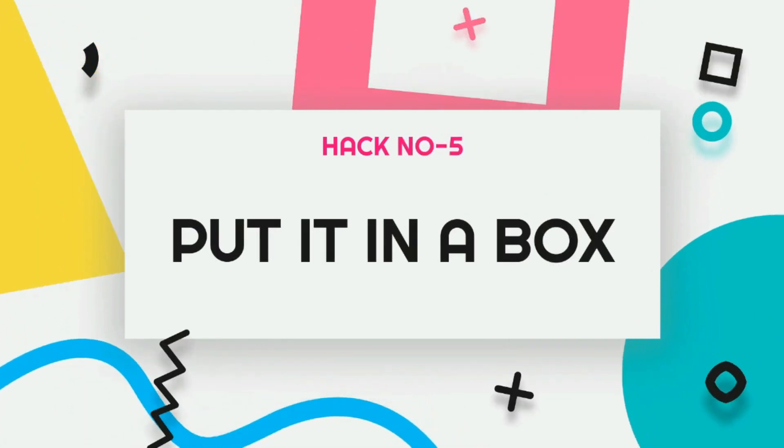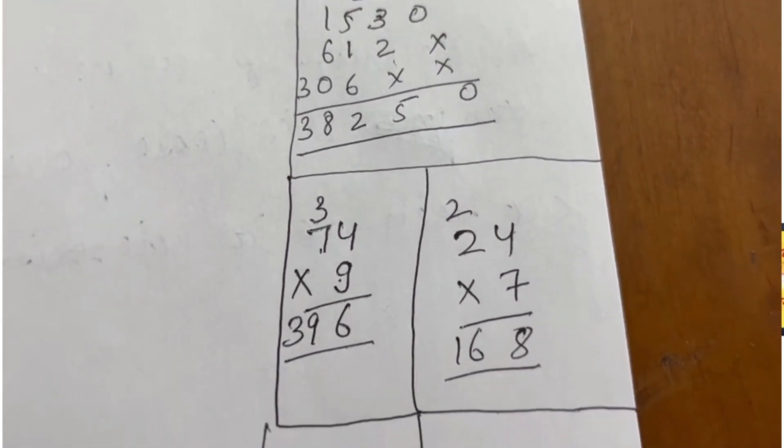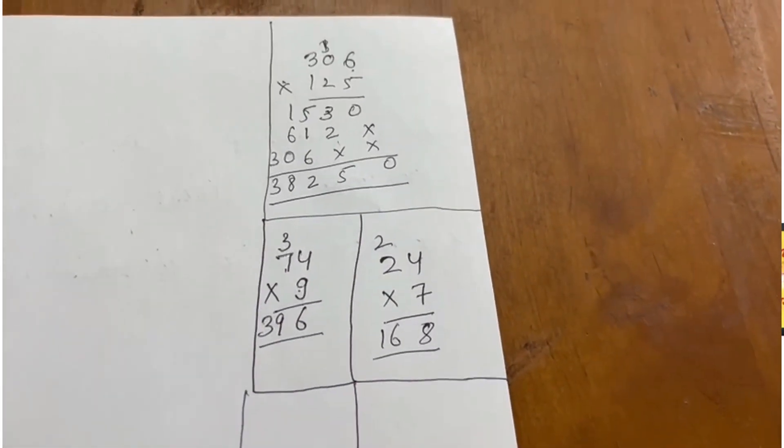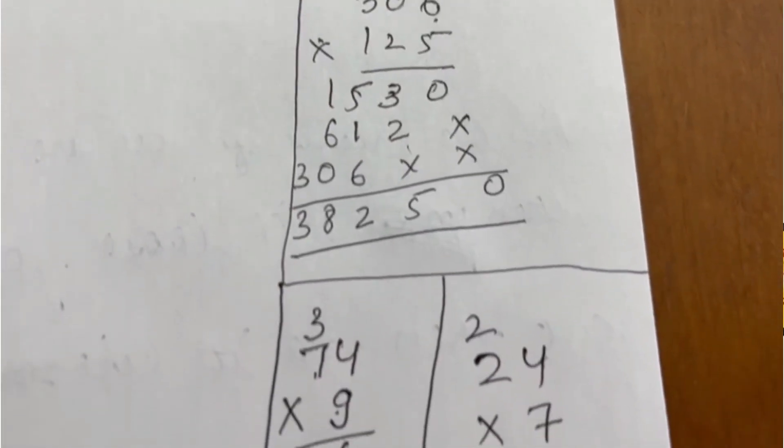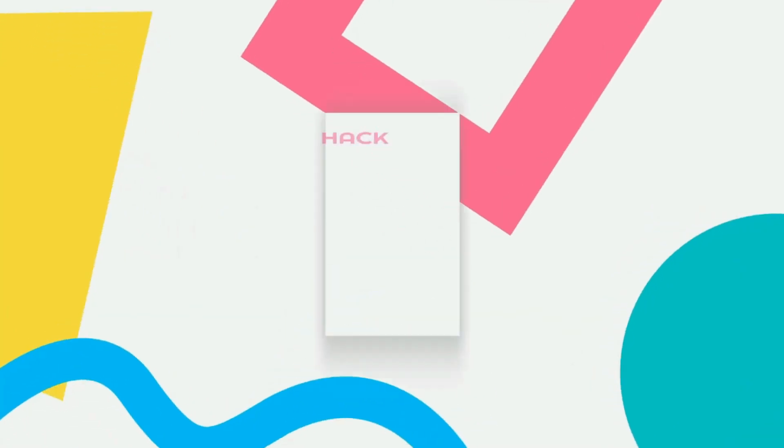Now, the next hack is put it in a box. So, maths ke andar, agar aap calculation ke andar a rough column banate hai, so always try to put it in a box. At times kya hota hai ki because of panic, hum bahut saari calculations kar dete hai and one calculation gets mixed to the other one and we just don't know ke humne kya likha aur hum confused ho jate hai. So, always every question ke liye jo aap kar rahe hai calculation just put it in a different box.